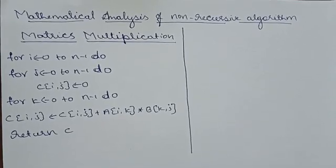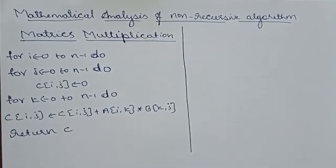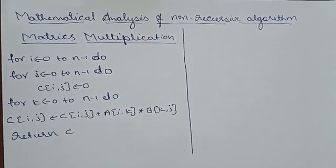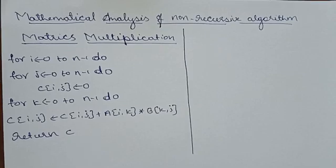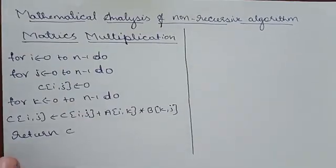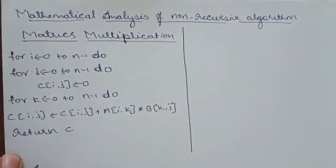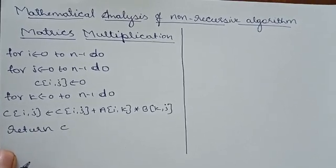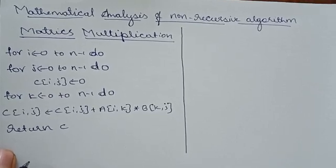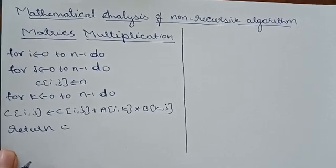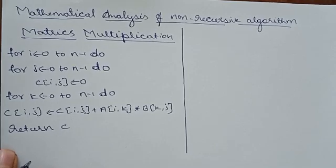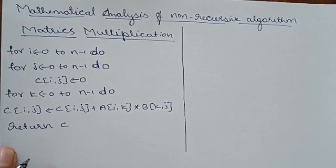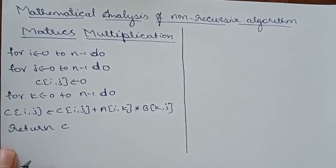In the last video we saw the mathematical analysis of non-recursive algorithms. Previously we analyzed one algorithm — identifying the maximum element in an array — which had only one for loop. This is a different variant where we have three for loops, so we need three summations. The algorithm I have taken is matrix multiplication.